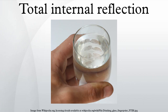Total internal reflection is a phenomenon that happens when a propagating light strikes a medium boundary at an angle larger than a particular critical angle with respect to the normal to the surface. If the refractive index is lower on the other side of the boundary and the incident angle is greater than the critical angle, the wave cannot pass through and is entirely reflected.